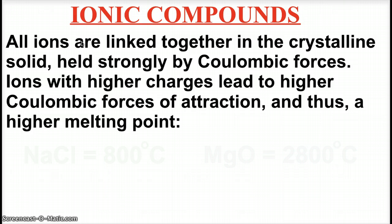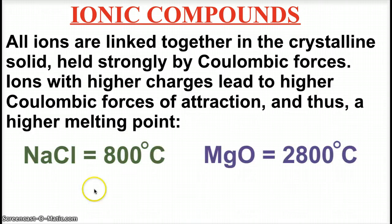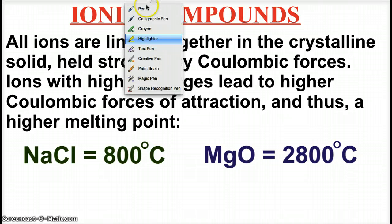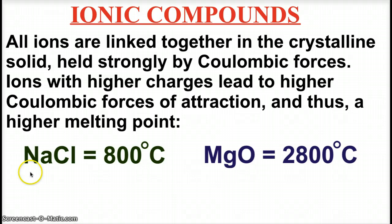For example, sodium chloride will melt at 800 degrees Celsius, whereas magnesium oxide melts at 2800 degrees Celsius. The difference is because of those coulombic forces of attraction. Sodium is a plus one ion, chloride is minus one. Magnesium is plus two.